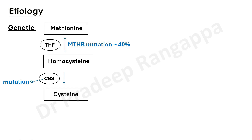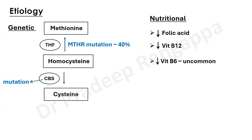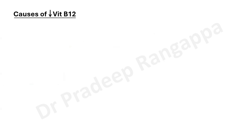The acquired causes — deficiency of these vitamins — are less common since most cases are genetic. Nutritional causes include reduction in folic acid (B9), vitamin B12, or vitamin B6 (pyridoxine), and these are relatively uncommon. However, one needs to keep these vitamins at optimal levels even in genetically mediated cases, because if they are suboptimal, the conversions that should happen are further impaired.